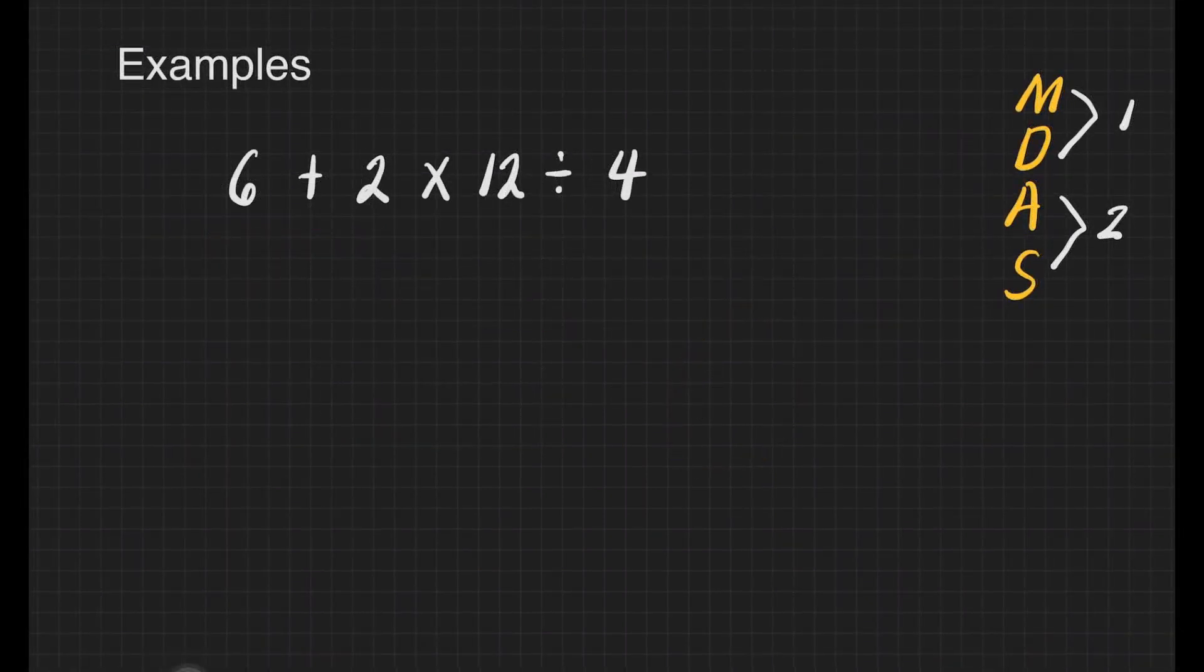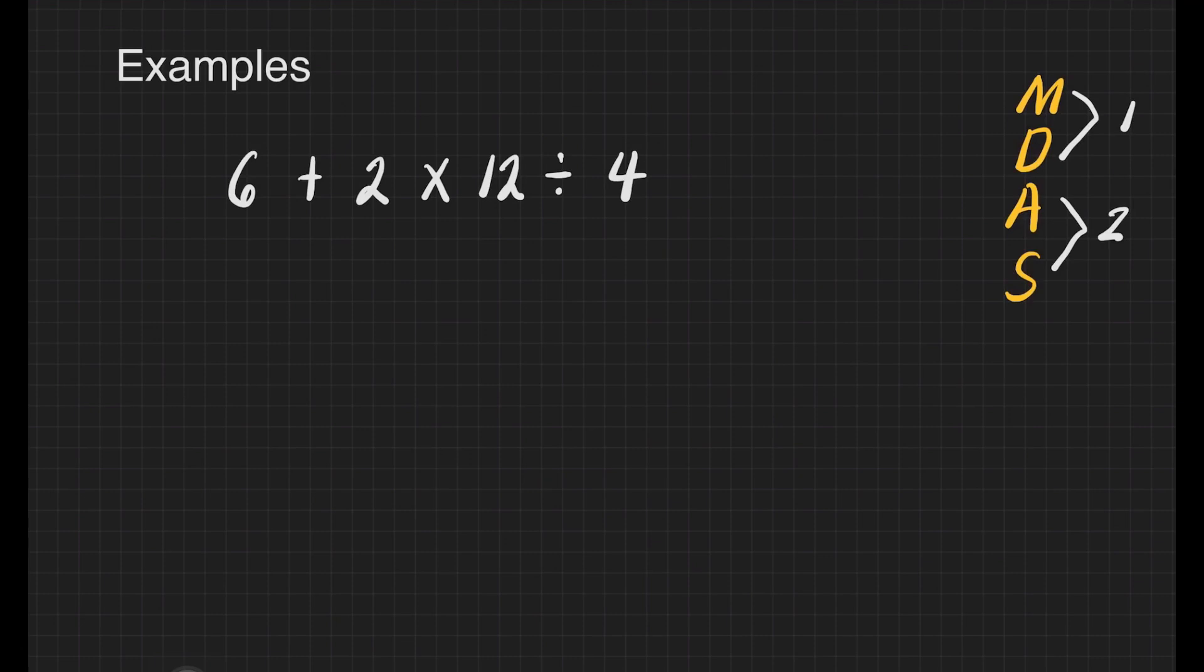We have another problem: 6 plus 2 times 12 divided by 4. What are we going to do first? Add, multiply, or divide? Following the MDAS rule, we will multiply.